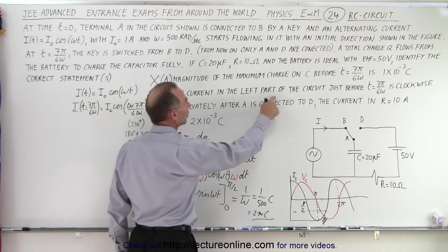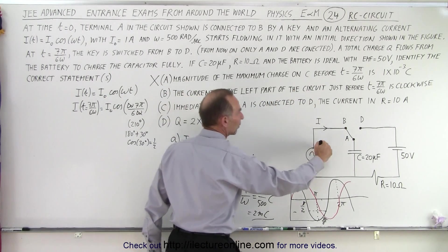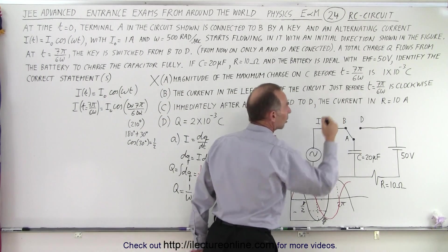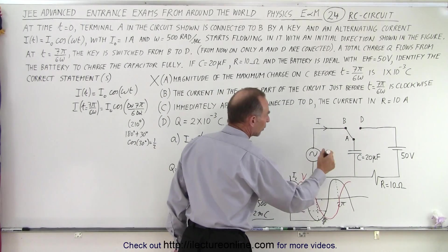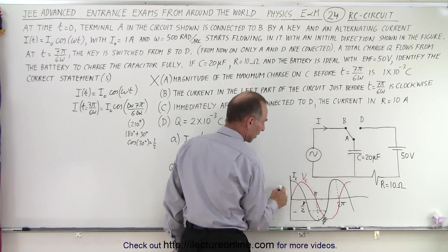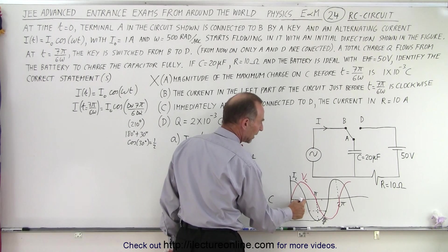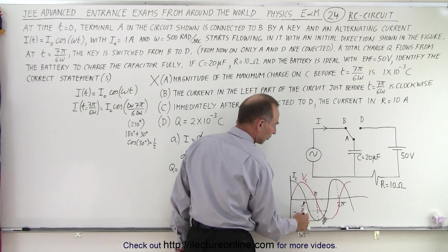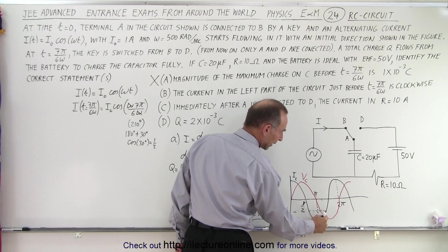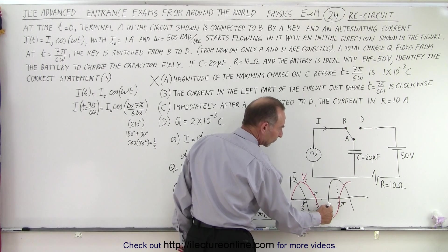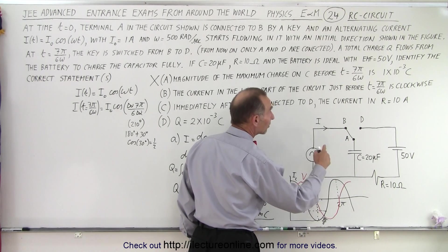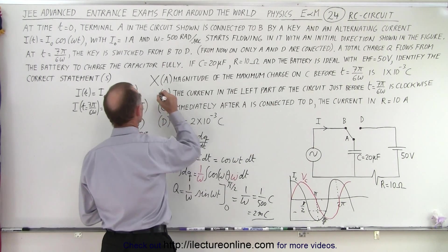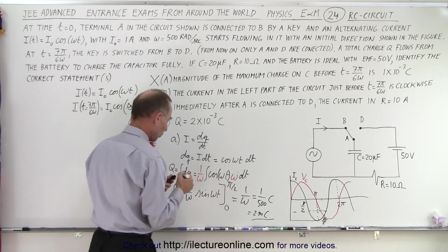Part B, the current in the left part of the circuit just before we make the switch change is clockwise. So clockwise would be like this. But we already know that it starts out clockwise until we reach this point in time, and then the current begins to reverse. And so before we get to this point right here, the current is still going in the negative direction until we reach this point. So that means it's going counterclockwise at that moment. And so that means B is also incorrect.